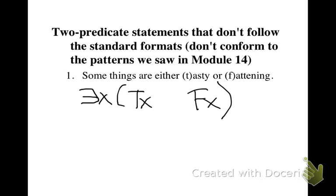But we see that in between these two predicates we have an OR statement. So we need to represent that, so instead of the usual ampersand in between the two predicates in the statement, we put a wedge. Because it's not saying some things are both tasty and fattening. It's saying they're one or the other. I mean, they could be both, but it's saying, look, they're either one or the other. It has an explicit OR in it, so we need to represent that in our translation.